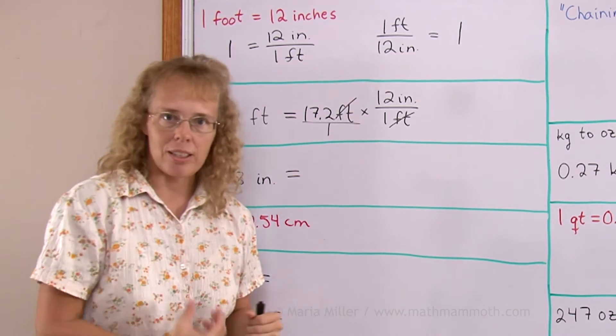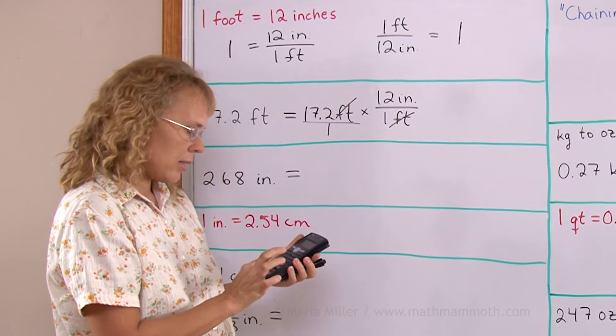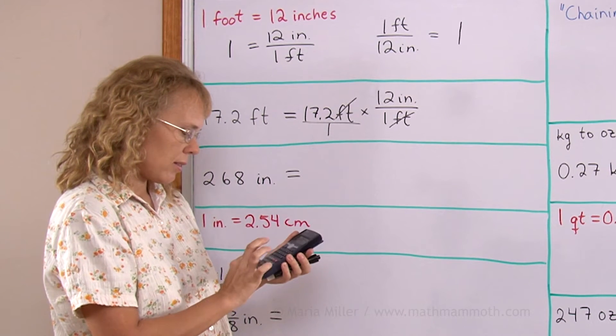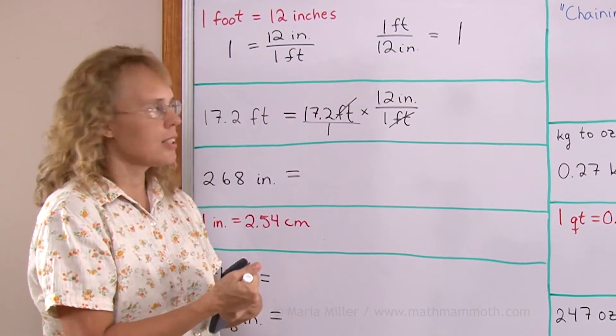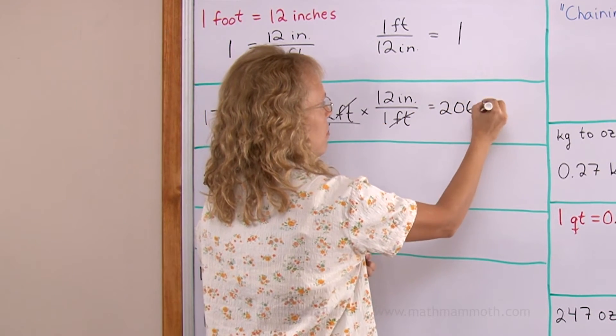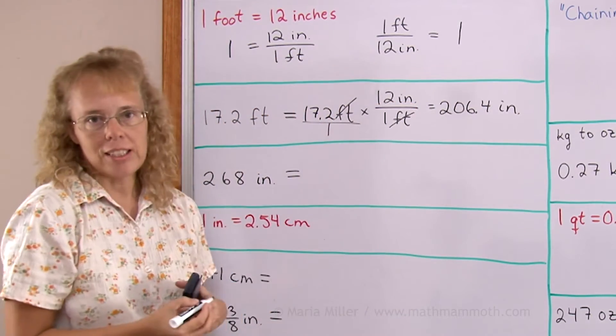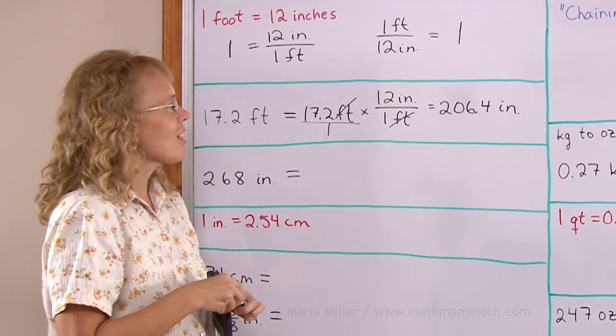Now, I'll use the calculator for the multiplication. 17.2 times 12 and I get 206.4 inches. The inches here do not cancel out, so the unit inches is still there.